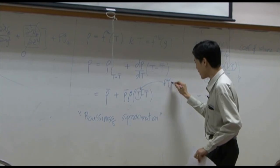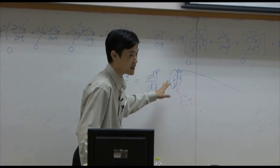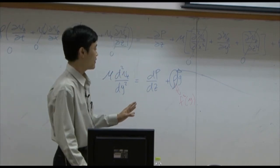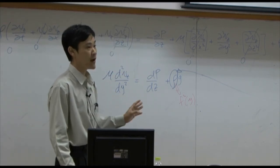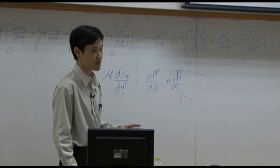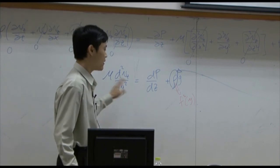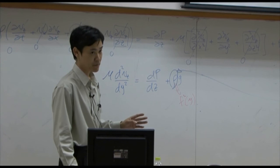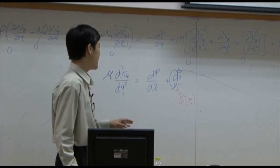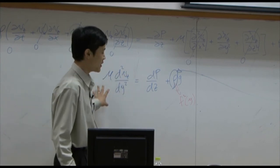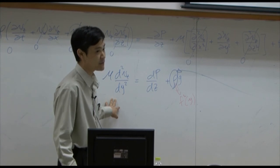It's function of y. Right hand side is function of z. They're equal only when they're constant. And solve them, integrate them independently. If you do that, you get velocity as function of y. That's velocity profile.